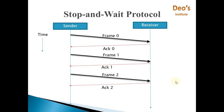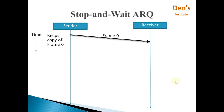In practice, a noiseless channel is not possible. So the next three protocols — stop-and-wait ARQ, go-back-N, and selective repeat — handle noisy channels. In stop-and-wait ARQ (automatic repeat request), the sender sends frame 0 and keeps a copy of frame 0 at the sender side.